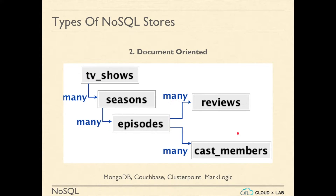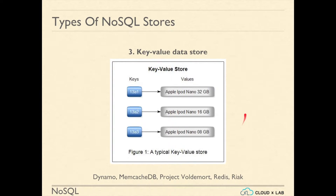The third kind of NoSQL stores are Key-Value stores. Such NoSQL stores store each record in the form of a key and value. Key and value can be primitives such as string, byte array, number, or boolean. Key-value stores are the most primitive and the first data stores to be invented. Examples of key-value stores are Amazon Dynamo, MemcacheDB, Voldemort, Redis, and Riak.